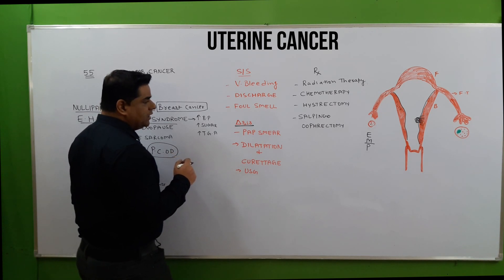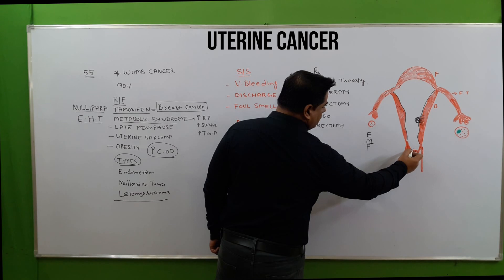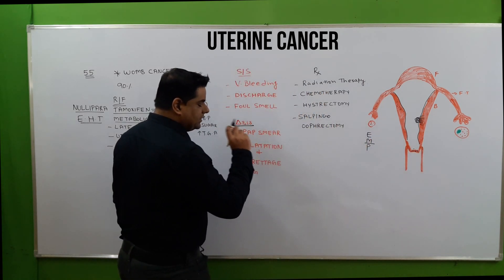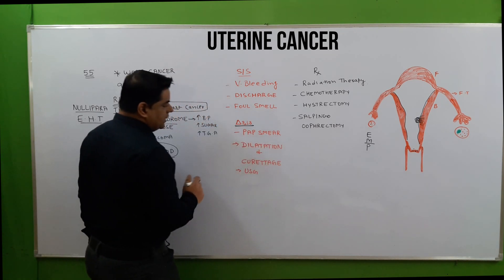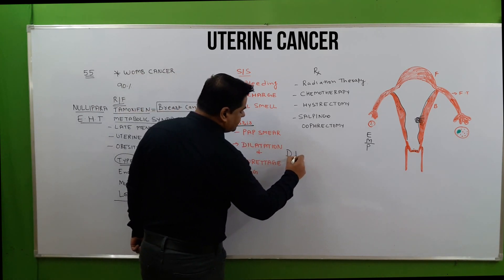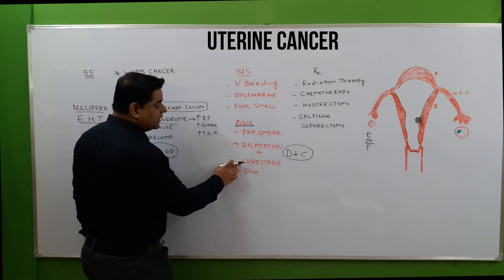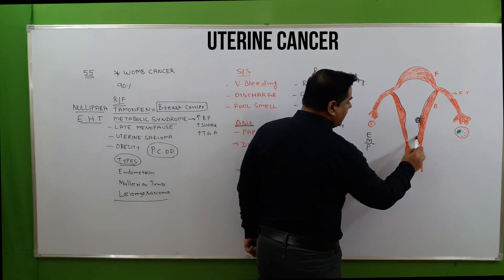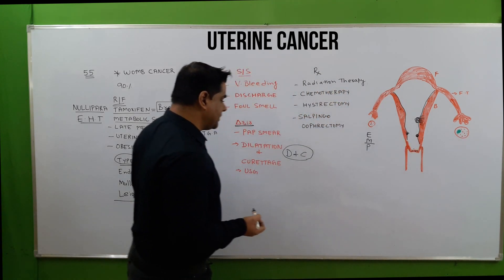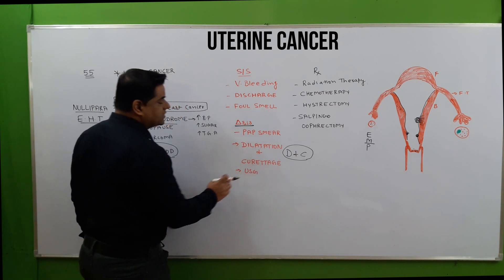Diagnosis includes the Pap smear test, done to check for the presence of cancer cells in the cervix area and to rule out cervical cancer. Dilatation and curettage, also known as D&C, is done by inserting a uterine sound and taking a small tissue section for biopsy purposes. Ultrasonography is also useful in diagnosis.